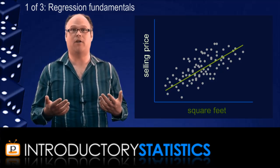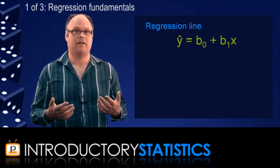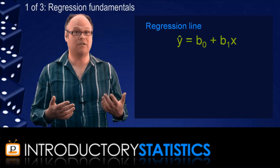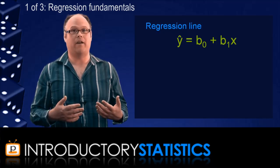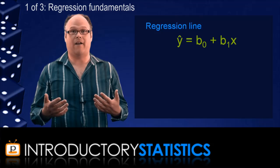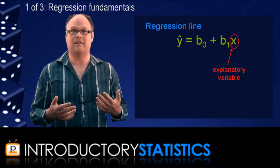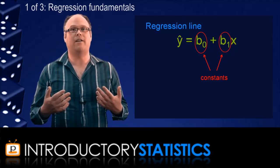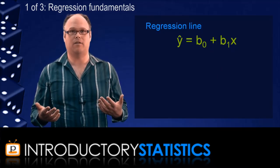Now in the context of regression, we write the equation like this. The fact that there is a little hat on the y in that equation means that we are using this equation to come up with a predicted value for the variable y. We plug in a value for the explanatory variable, that's the little x. And that, together with the two constants, b₀ and b₁, produce a predicted value, ŷ, for the response variable.